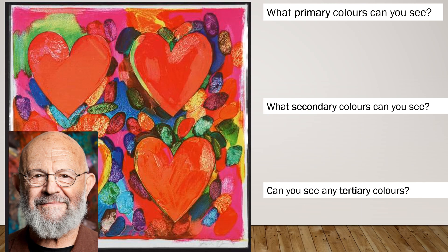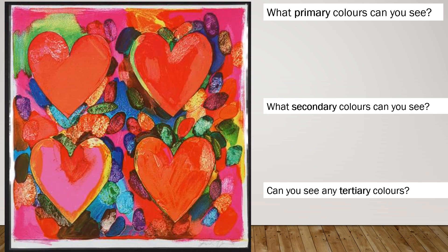This is a painting that Jim Dine painted — that's his picture there — and it's called Four Hearts. I thought it was a perfect piece of art for a game we're going to play called Find the Colors. Can you take a look at the picture Four Hearts and see if you can identify and list all of the primary colors you can see, the secondary colors, and then the tertiary colors that Jim used? Remember to use the color names. Pause the video and then when you are ready, I will share the color names that I saw.